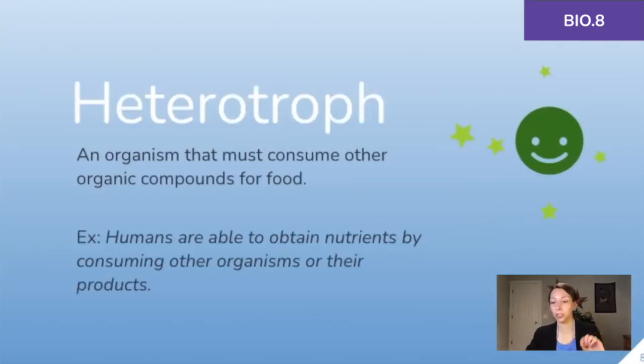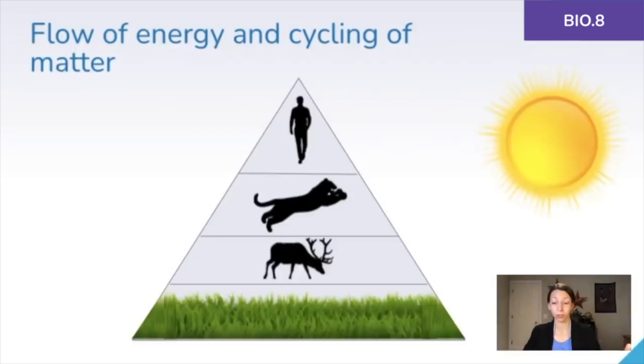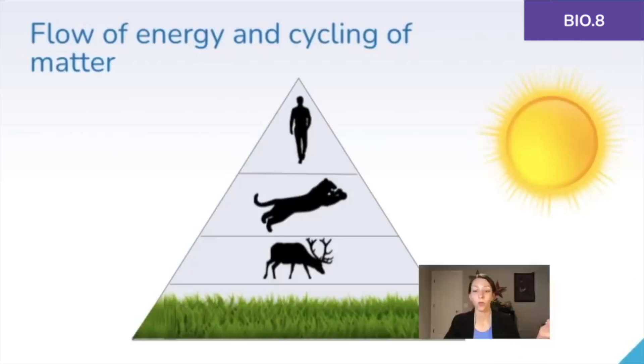Heterotrophs are organisms that must consume other organic compounds for food, and that means consuming other organisms. Heterotrophs are consumers. For example, humans are able to obtain nutrients by consuming other organisms or the products of other organisms. Right here we're looking at a trophic pyramid. At the bottom we have producers, then we have our primary consumers, followed by our secondary consumers, and our tertiary consumers. At each level in a trophic pyramid we know that energy is lost, usually as heat, but up to 90 percent of energy is lost every time you go up a level in an energy pyramid. We know that it's more efficient to consume lower on the pyramid than it is to be a tertiary or quaternary consumer.